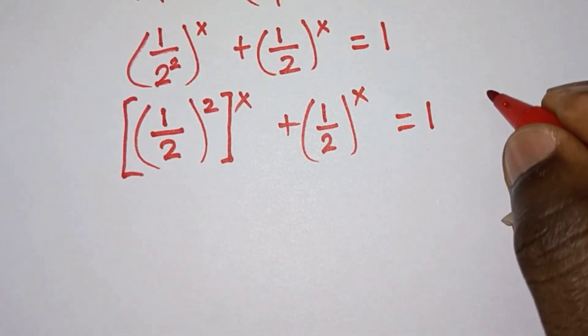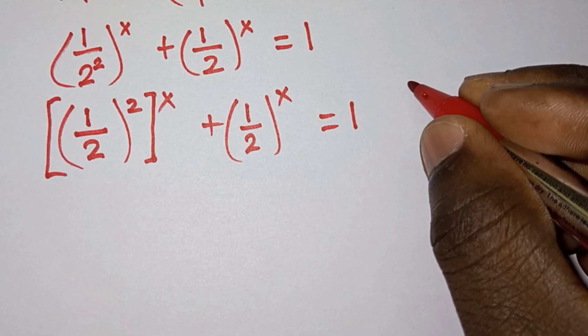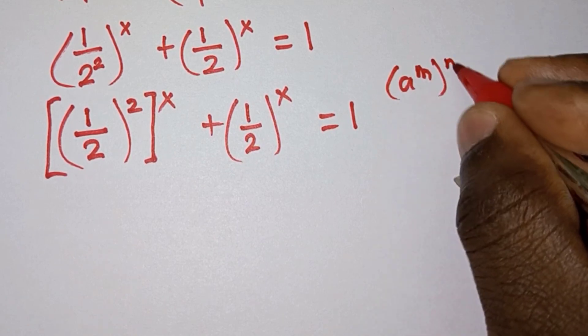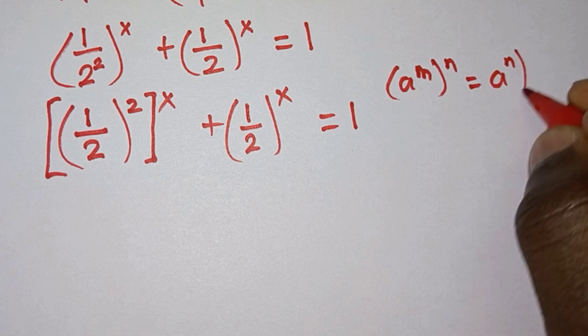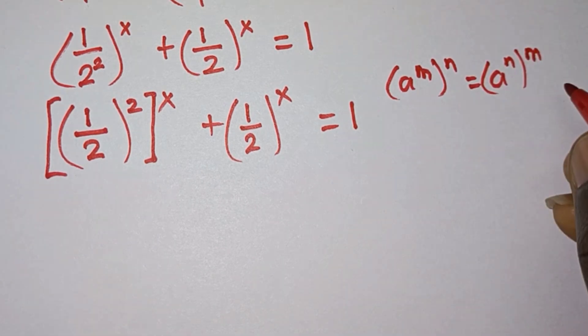Now from here we will apply a rule which says that (a^m)^n is the same as a^(m×n).